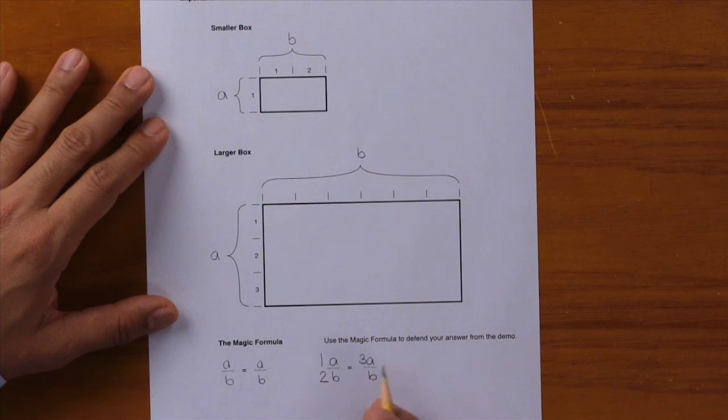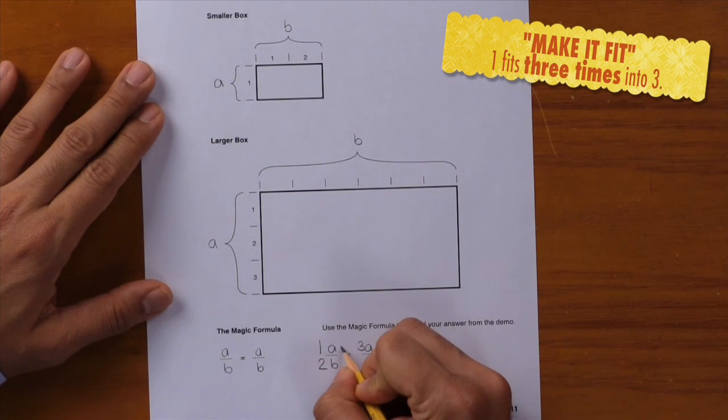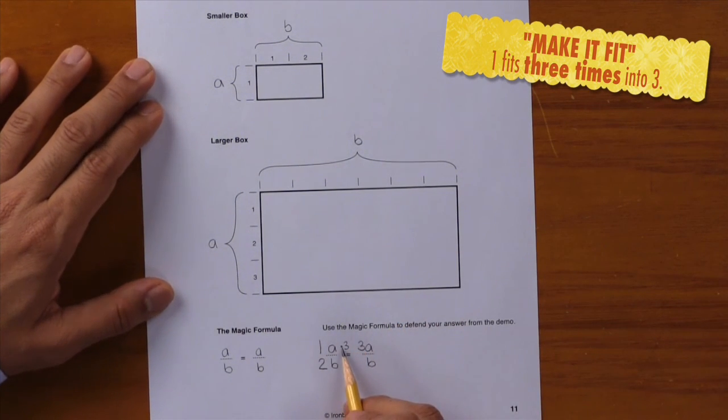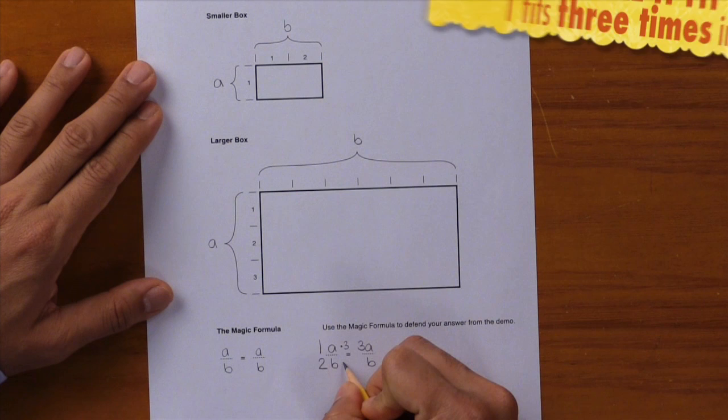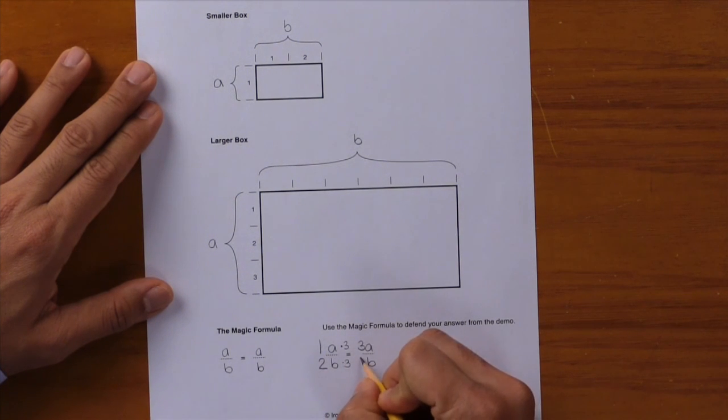Here we have an equivalent fraction. How did you get from one to three? We got there by multiplying by three, so I'll write times three. Whatever you do to the top of a fraction (the numerator), you also have to do the same thing on the bottom (the denominator), so write down times three. One times three gives you that three. Two times three gives you the six. Circle it.